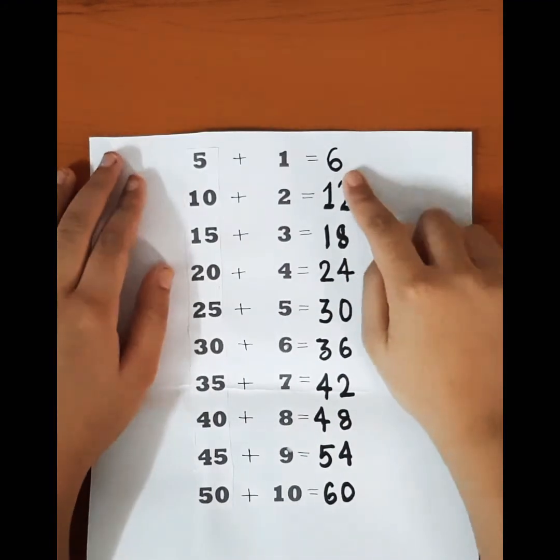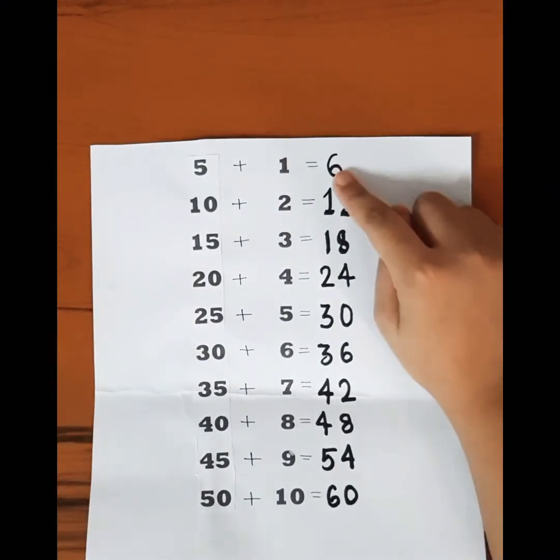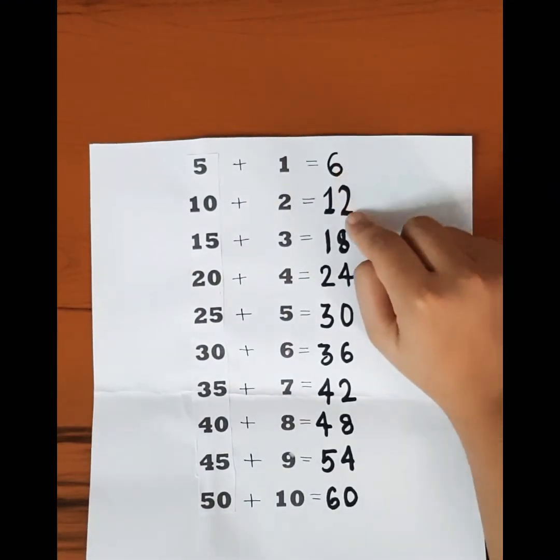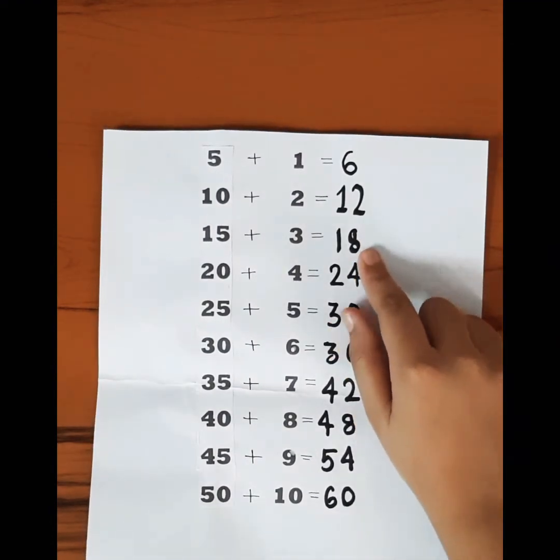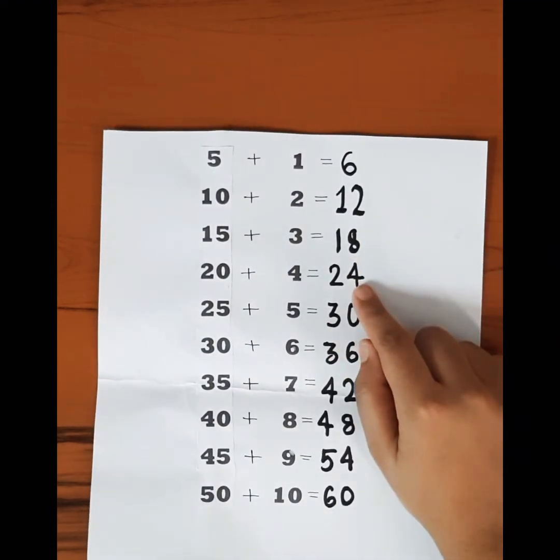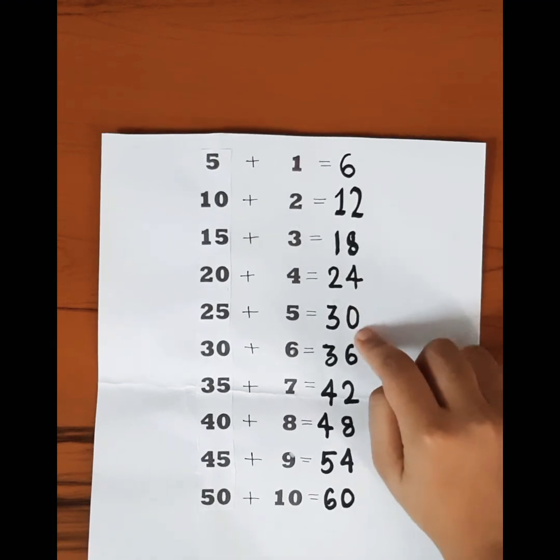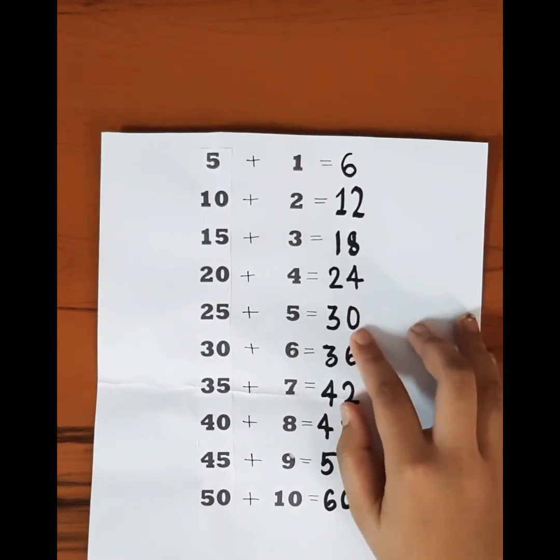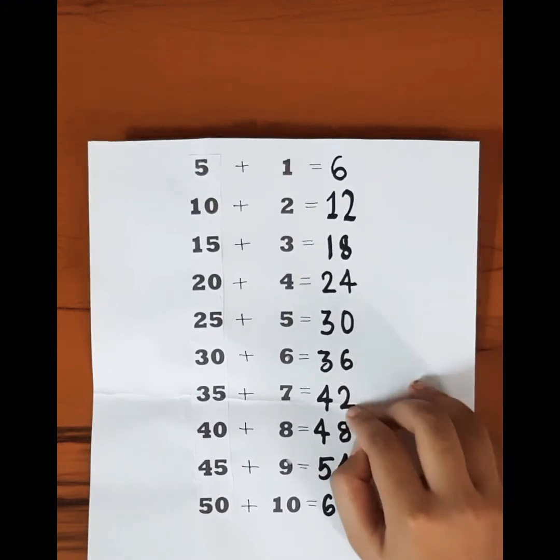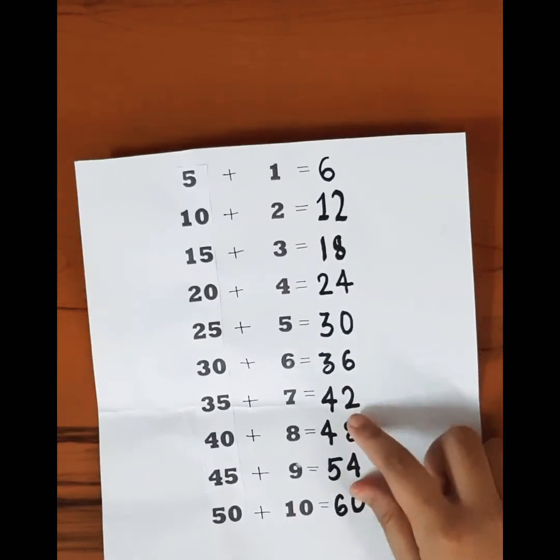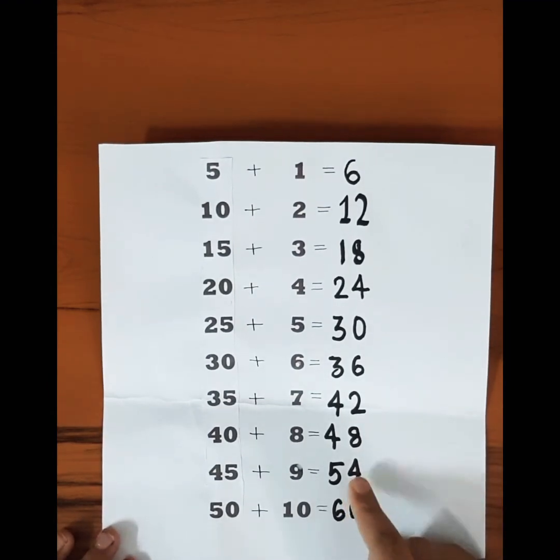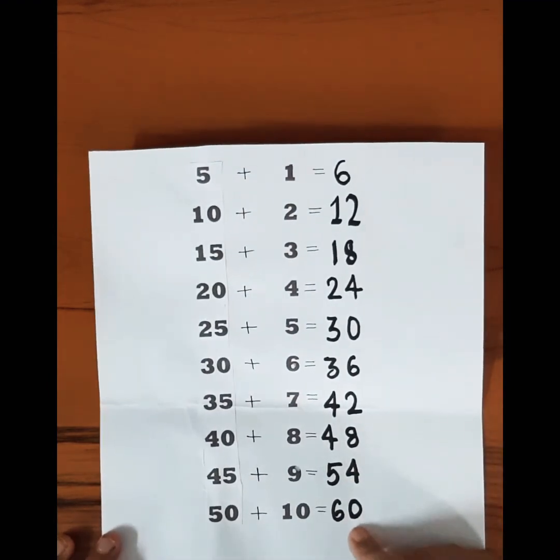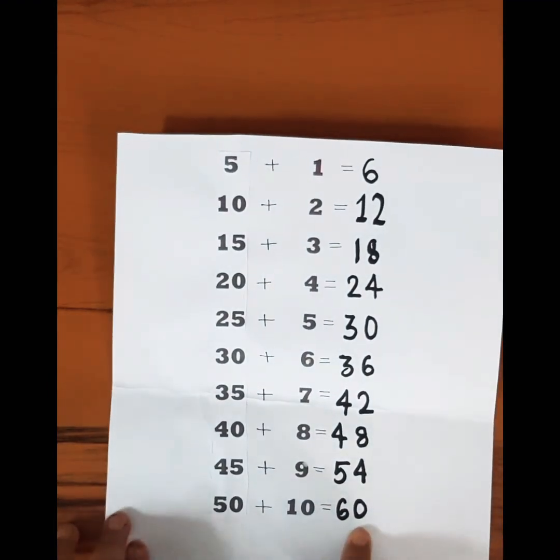Six into one is six, six into two is twelve, six into three is eighteen, six into four is twenty-four, six into five is thirty, six into six is thirty-six, six into seven is forty-two, six into eight is forty-eight, six into nine is fifty-four, and six into ten is sixty.